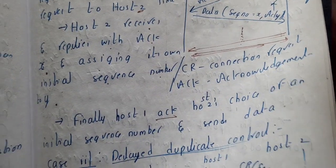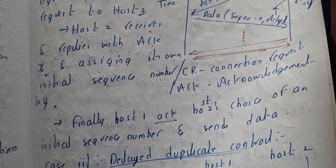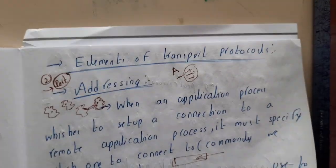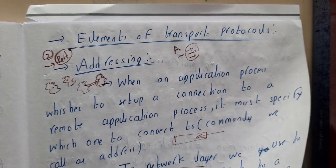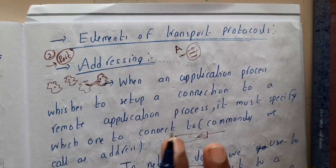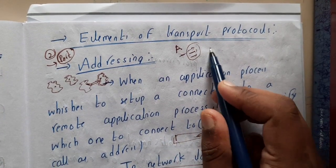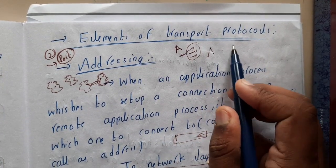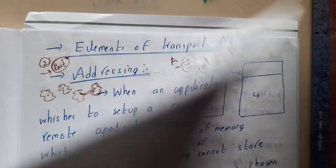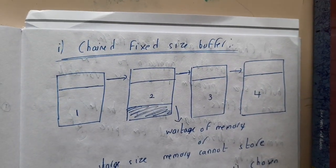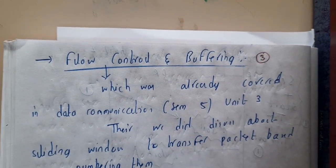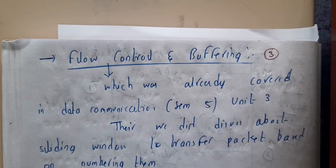This is how connections are established, data is transferred, and connections are released. Sorry for the lengthy lecture — it's about 16 to 17 minutes. I hope everyone got a basic idea about the elements of the transport layer protocol. We discussed addressing, connection establishment, data transfer, and release. In the next lecture, we will go through flow control and buffering. Thank you for watching.